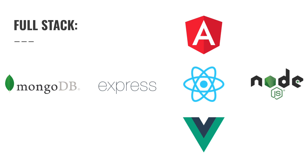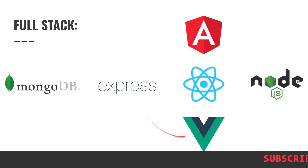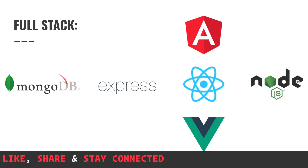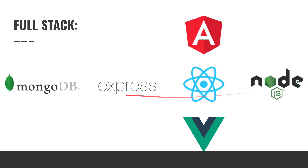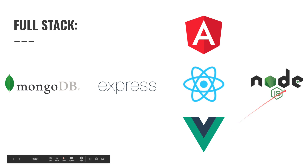So you can use either MongoDB, Express, Angular, and Node.js — the MEAN stack — or MongoDB, Express, React, and Node.js — the MERN stack — or MongoDB, Express, Vue.js, and Node.js — the MEV stack. It depends on you whether you want to follow the MEAN path, the MERN path, or the MEV path.